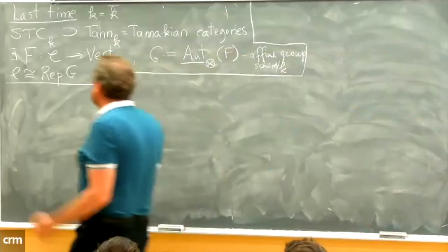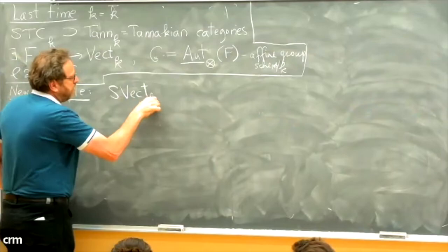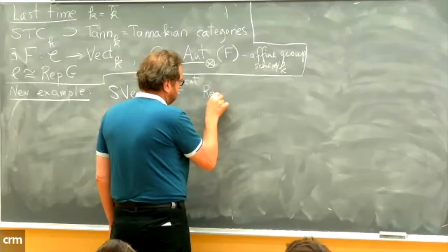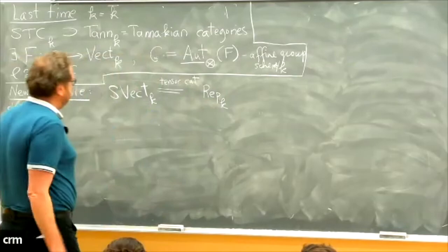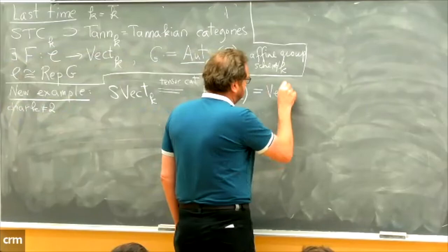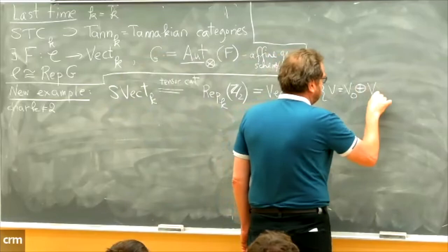The answer is yes. The first new example is the category of super vector spaces over k. As a tensor category without braiding, it is simply the category of representations of Z mod 2 (assuming characteristic of k not equal to 2), or equivalently the category of vector spaces graded by Z mod 2. So objects are vector spaces V = V₀ ⊕ V₁, where V₀ is the even part and V₁ is the odd part.